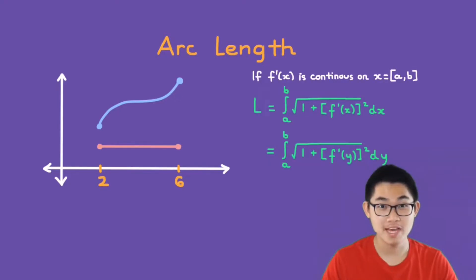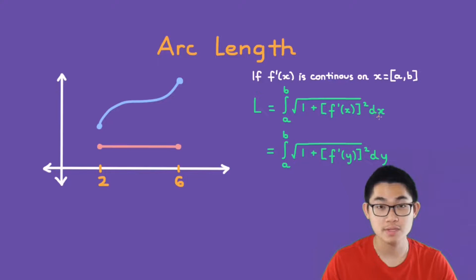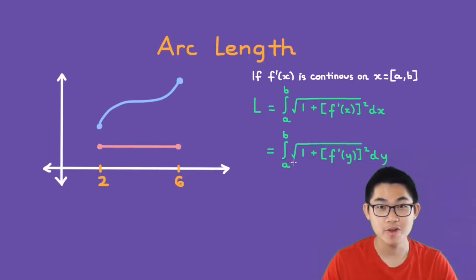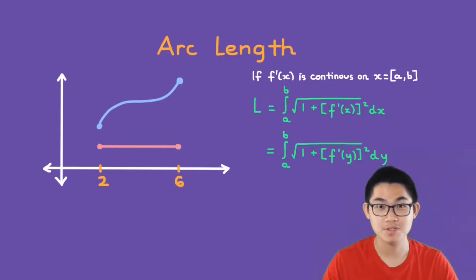The first formula you can use is L equals the integral from A to B of the square root of 1 plus f prime of x to the power of 2, dx. Or you can use the second formula, which is the integral from A to B of the square root of 1 plus f prime of y to the power of 2, dy. So go ahead and copy down these formulas and we'll go through some examples.